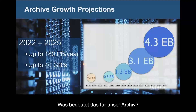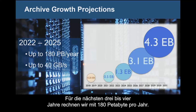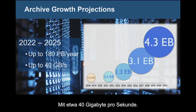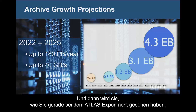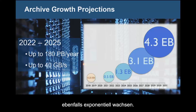What does this mean for our archive? For the next three to four years we are expecting 180 petabytes per year at roughly 40 gigabytes per second. We are now at half an exabyte — this will go quickly to one exabyte, and then, as you just saw from the Atlas experiment, the size will just grow exponentially.